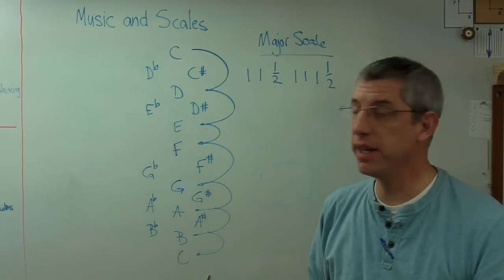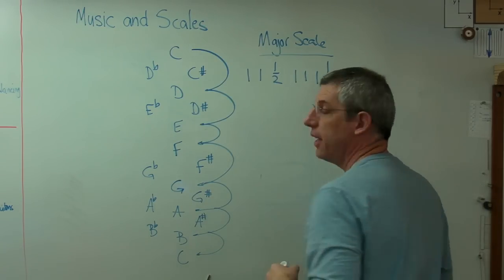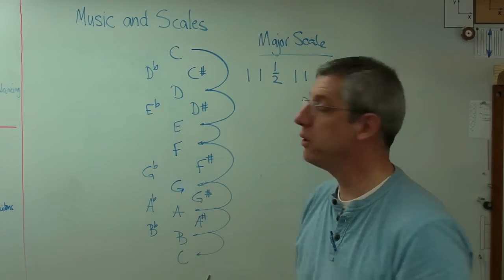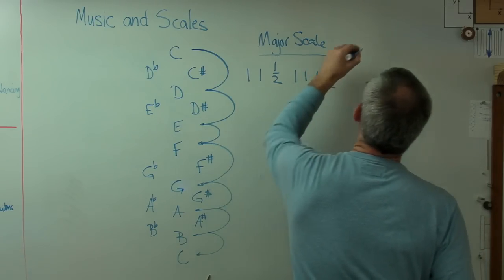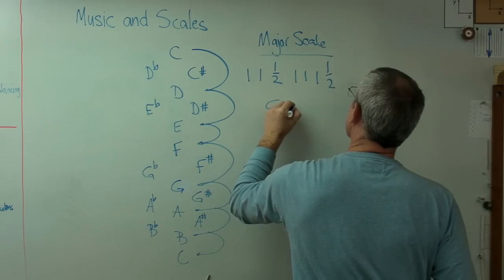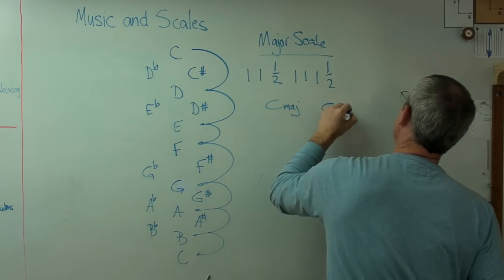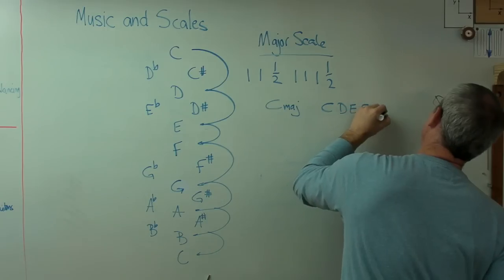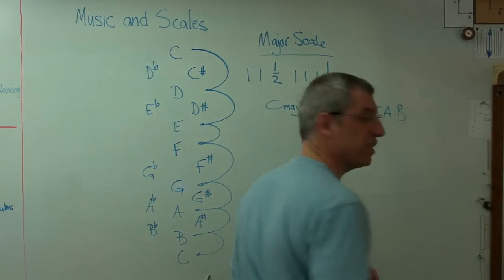And now you can see why everybody likes the key of C major. There's only natural notes. There's no sharps or flats. So a C major scale is C, D, E, F, G, A, B. It goes back to C again.